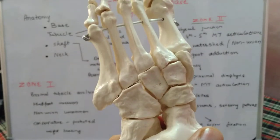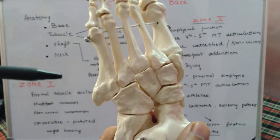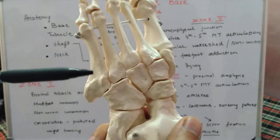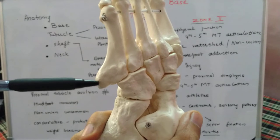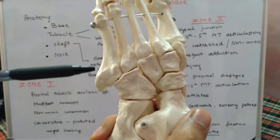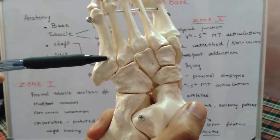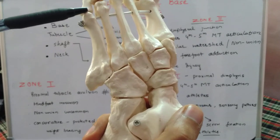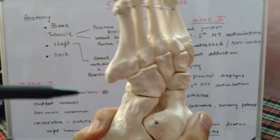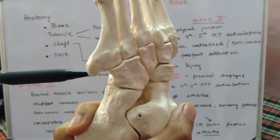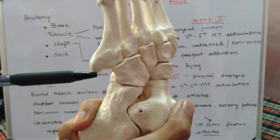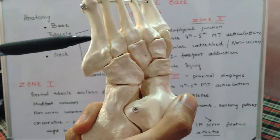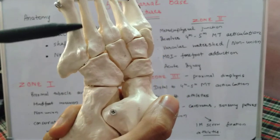Starting with the anatomy: this is the 5th metatarsal and its various parts. The proximal-most part is the base of the 5th metatarsal, which has a lateral tubercle or tuberosity. Then we have the metaphyseal-diaphyseal junction between the base and the shaft, followed by the shaft, neck, and distally the head. Regarding attachments, over the tuberosity we have the peroneus brevis tendon and the lateral band of the plantar fascia. Over the proximal diaphyseal region on the dorsal aspect, we have the attachment of peroneus tertius.